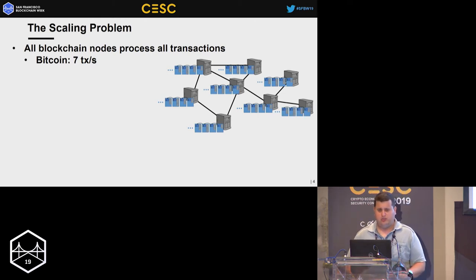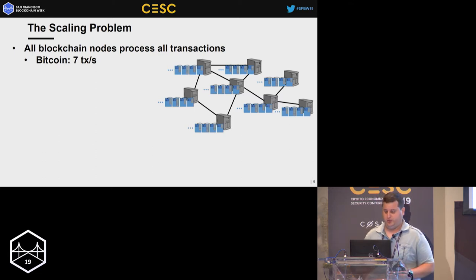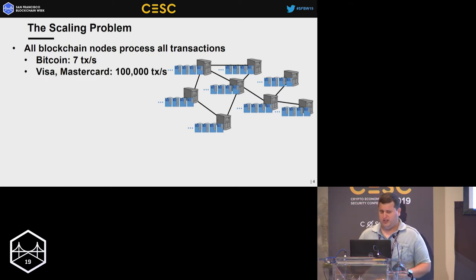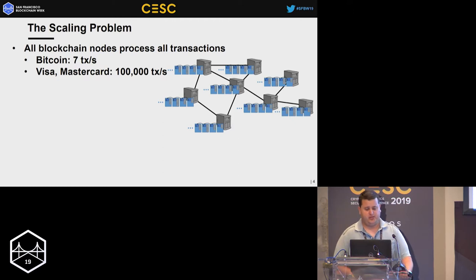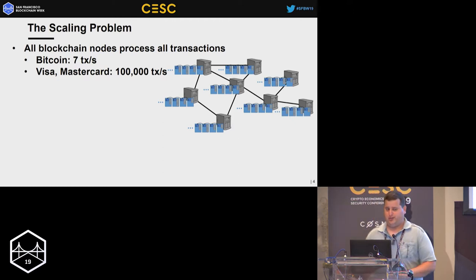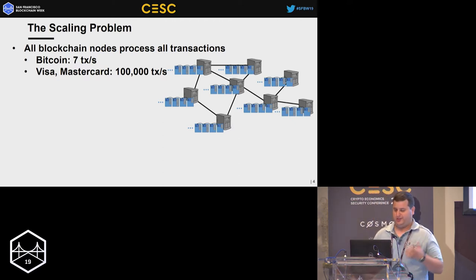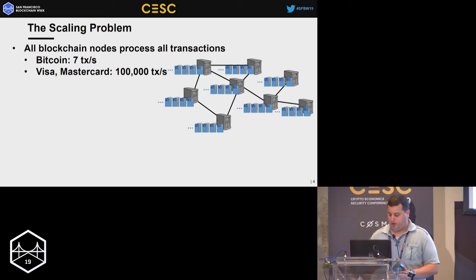Bitcoin can achieve around 7 transactions per second, while centralized payment hubs like Visa and MasterCard can process up to 100,000 transactions per second. I guess you see the difference.